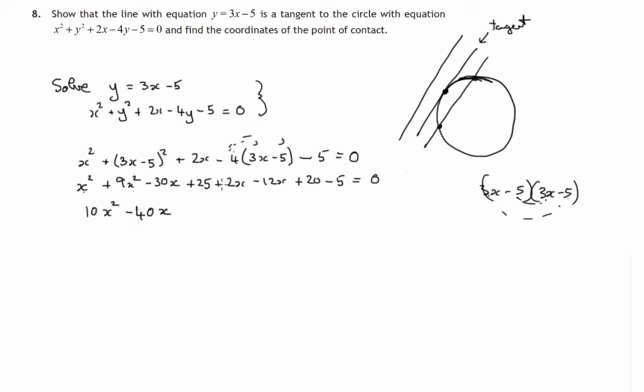Then the constants: 25 plus 20, 45 minus 5 is 40. Let's divide both sides by 10.